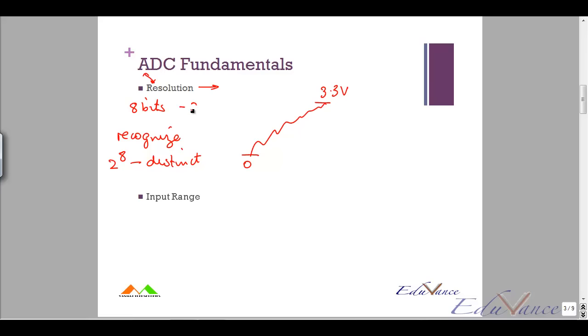If it is 2 bits, then it will be 2 raised to 2 which is 4 distinct levels, and it is always a power of 2. The range what the ADC recognizes, please understand the range that the ADC recognizes, is called the input range.